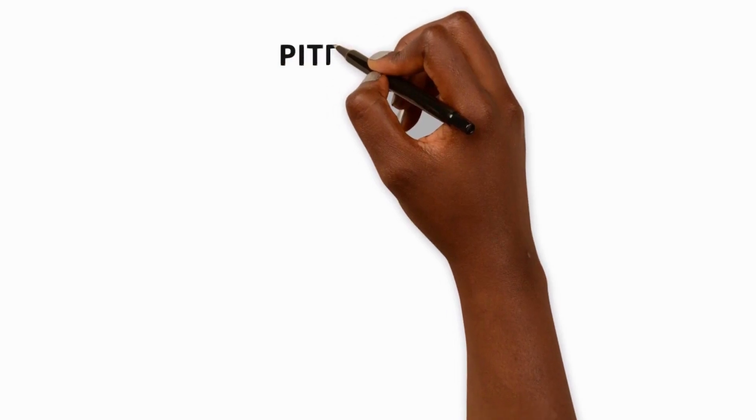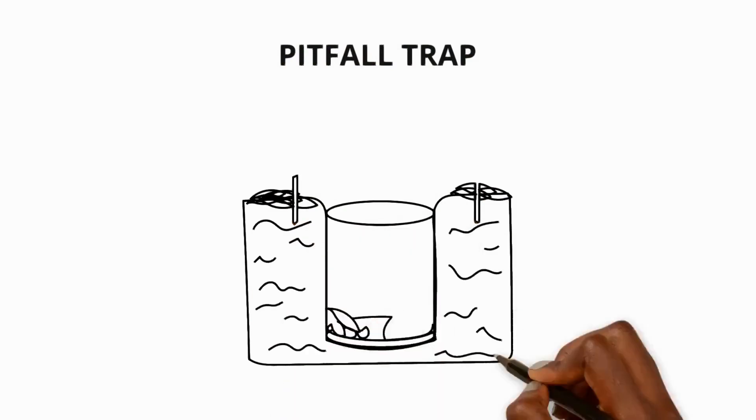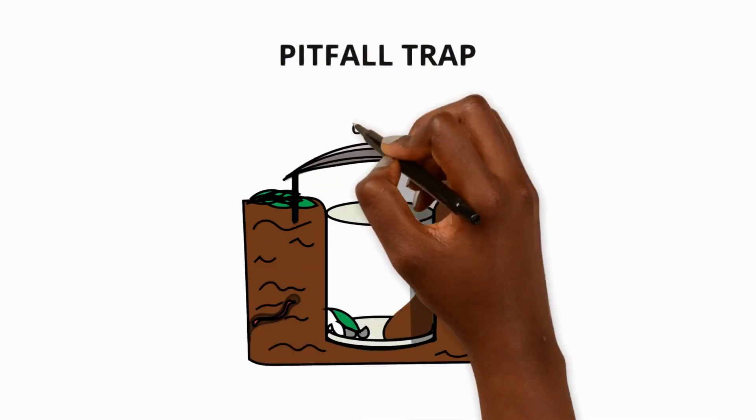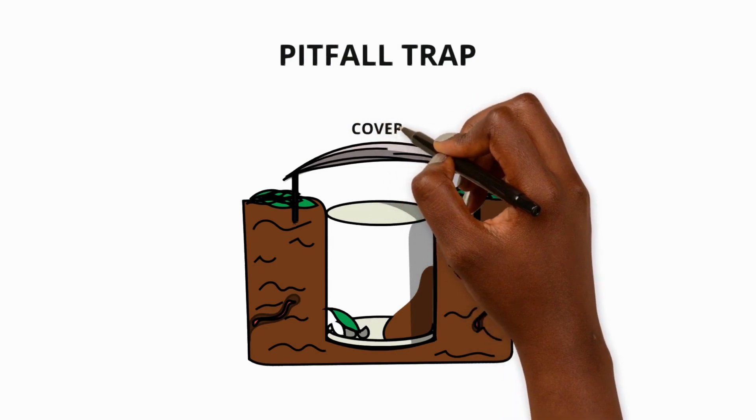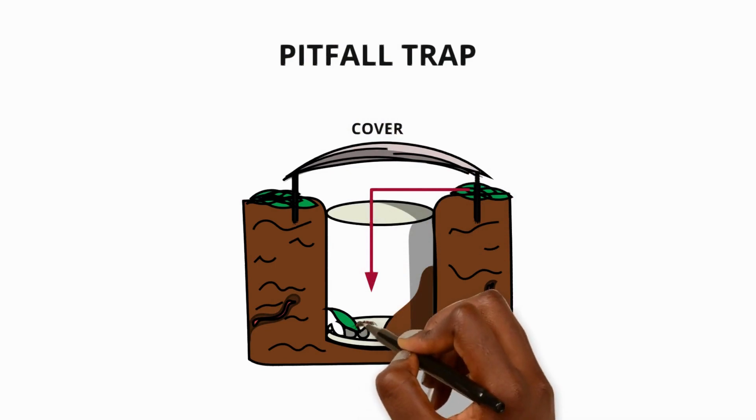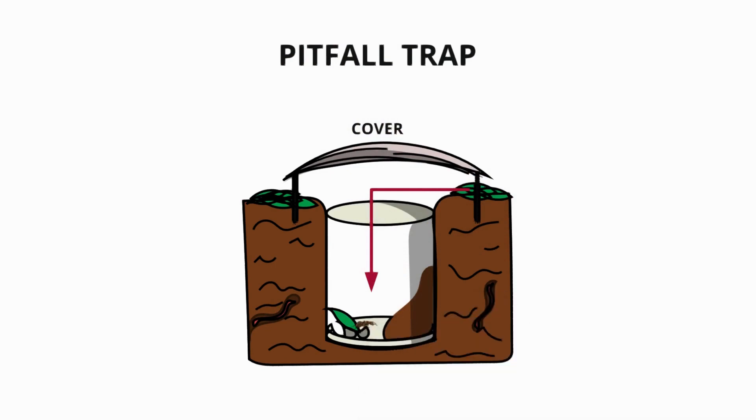Finally we can use a simple pitfall trap to catch invertebrates that live on the ground. You put a small container into a hole in the ground. You then cover the top of the container with a lid or a piece of cardboard leaving a small gap for the invertebrates to fall in. Then you can observe and identify them.